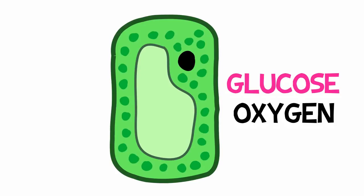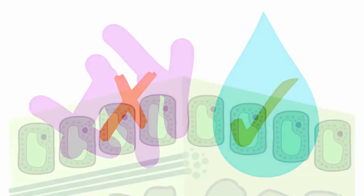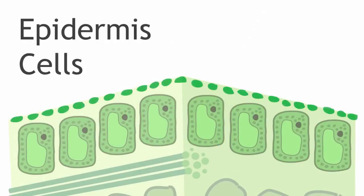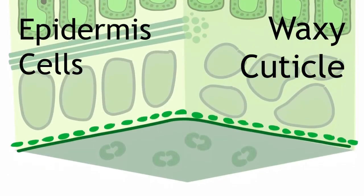But how does the leaf prevent unwanted intruders like bacteria from getting in and stop important reactants from escaping? Above the palisade mesophyll and below the spongy mesophyll are epidermis cells, which produce a waxy coating called the cuticle. The cuticle seals up the leaf so that the only way in and out is through the stomata, which are regulated by those guard cells.